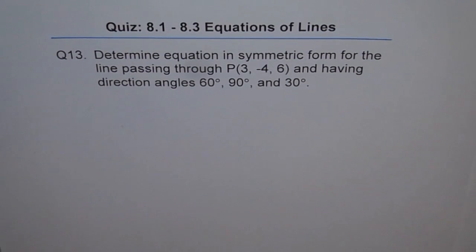Question 13. Determine equation in symmetric form for the line passing through point P(3, -4, 6) and having direction angles 60 degrees, 90 degrees and 30 degrees.